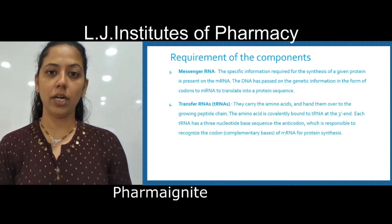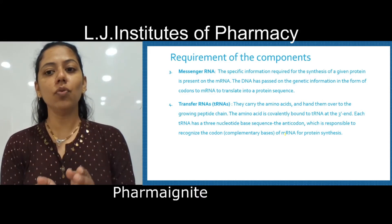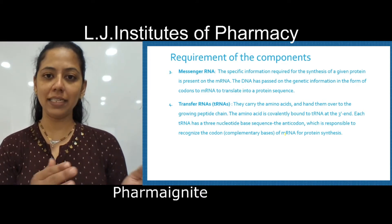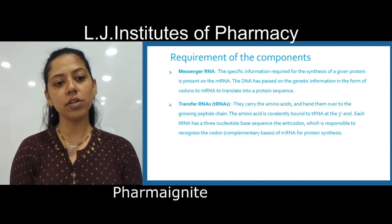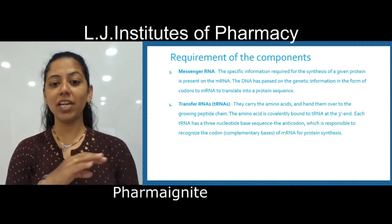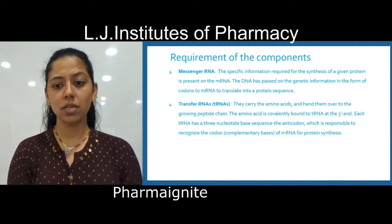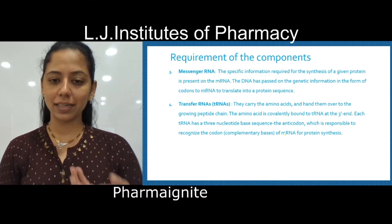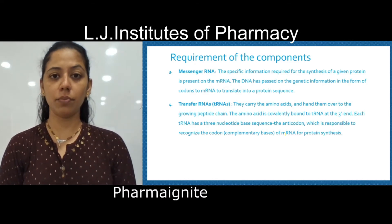Now, mRNA — the genetic information of DNA is transformed to mRNA in the form of codons, and that is actually translated into a protein sequence. That is the most important role of mRNA. Similarly, tRNA has an anti-codon — a three nucleotide base sequence which serves as an anti-codon — that will recognize the codon present over mRNA for protein synthesis.